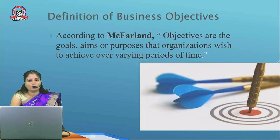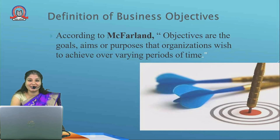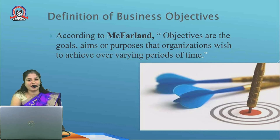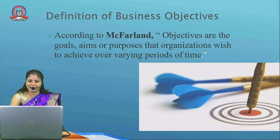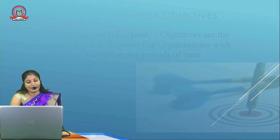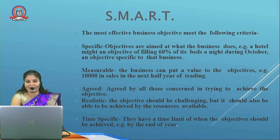We want to achieve our objectives. For example, a student studying in 12th standard wants to achieve good results in that particular year itself — results achieved after two years cannot be called an objective. Whenever we set an objective, we have to achieve it within a specified period of time; only then can it be called an achieved objective.